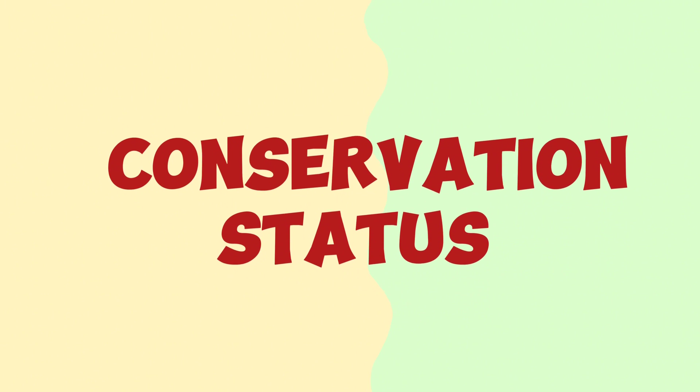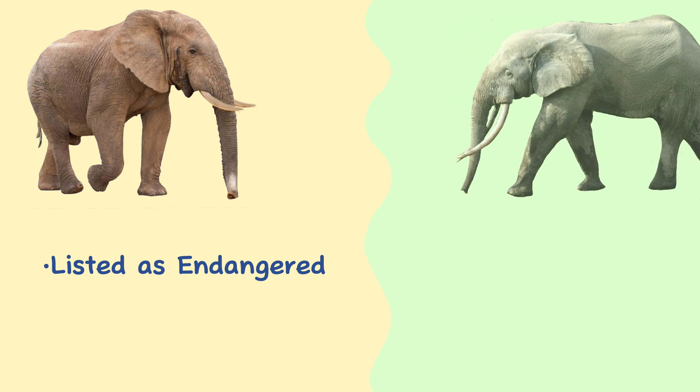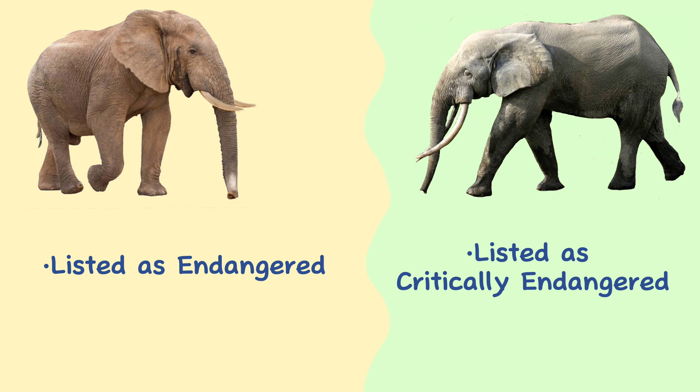Conservation status. Since 2021, the African savannah elephant has been listed as endangered on the IUCN Red List, while the African forest elephant has been listed as critically endangered.